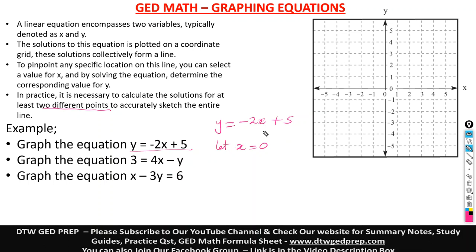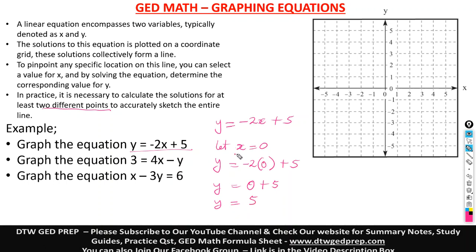When you let X equal to zero in this equation — I have done evaluating algebraic expressions — it means wherever X is in this equation, make it zero. So we have Y is equal to negative two times zero, plus five. Negative two times zero gives us zero, then plus five. Finally, Y is equal to five. So our first point: when X is zero, Y is five. Our coordinate point is (0, 5).